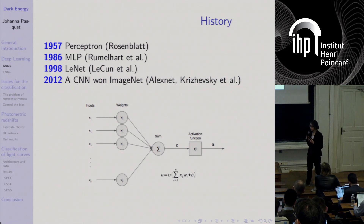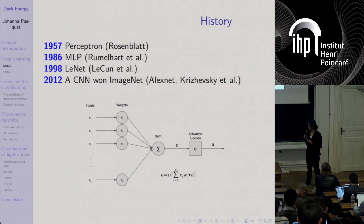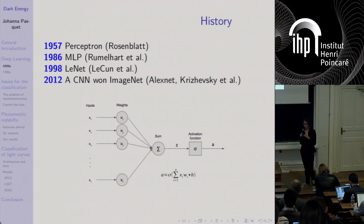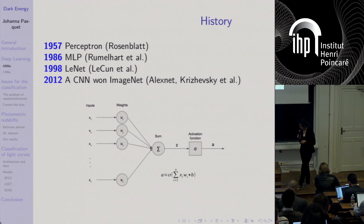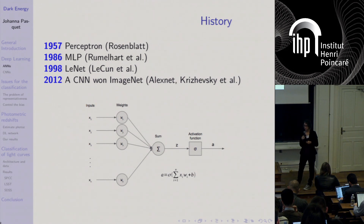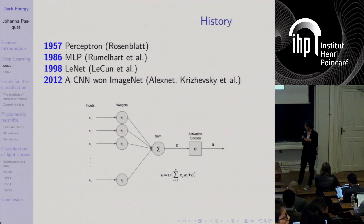Since 1998, a new type of architecture based on convolution was developed by LeCun, where neurons are in fact several kernels of convolution that convert the image and produce new features. Since 2012, when CNN won the famous ImageNet challenge, it became a starting point for this method and is now used in many applications.